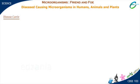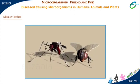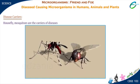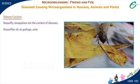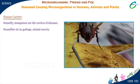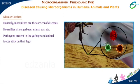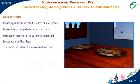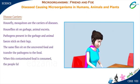Disease-carriers: There are some animals and insects which carry disease-causing microorganisms. House-flies and mosquitoes are carriers of diseases. House-flies sit on garbage and animal excreta. Pathogens present in the garbage and animal feces stick to their legs. The same flies then sit on uncovered food and transfer the pathogens to it. When this contaminated food is consumed, people fall sick.